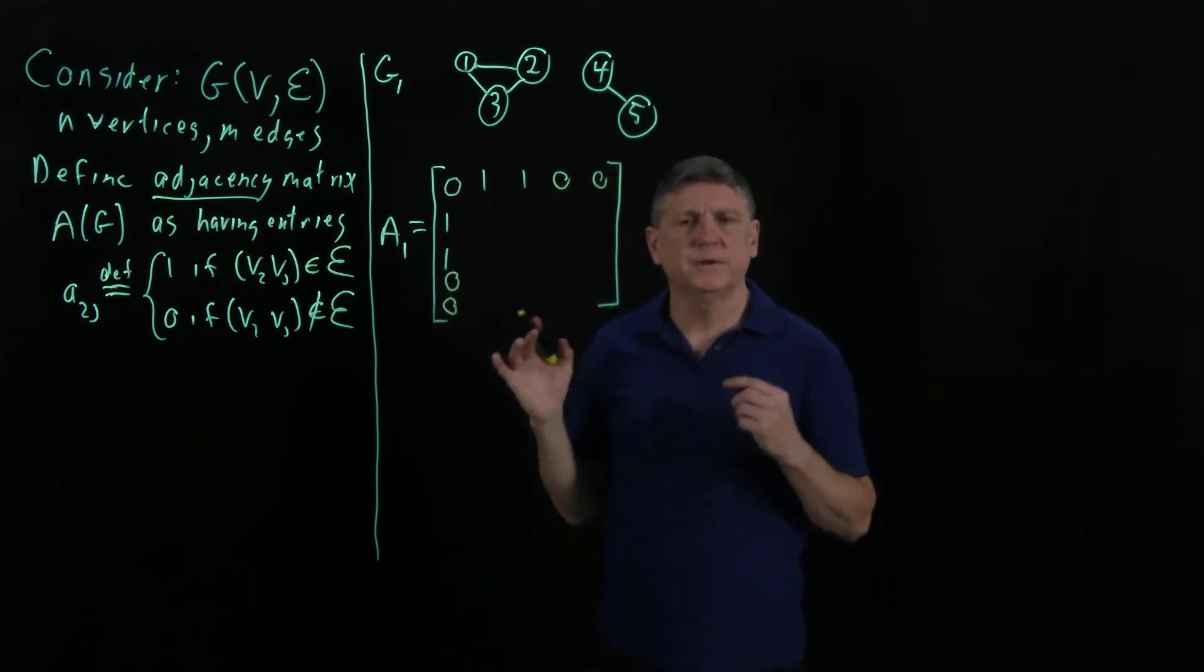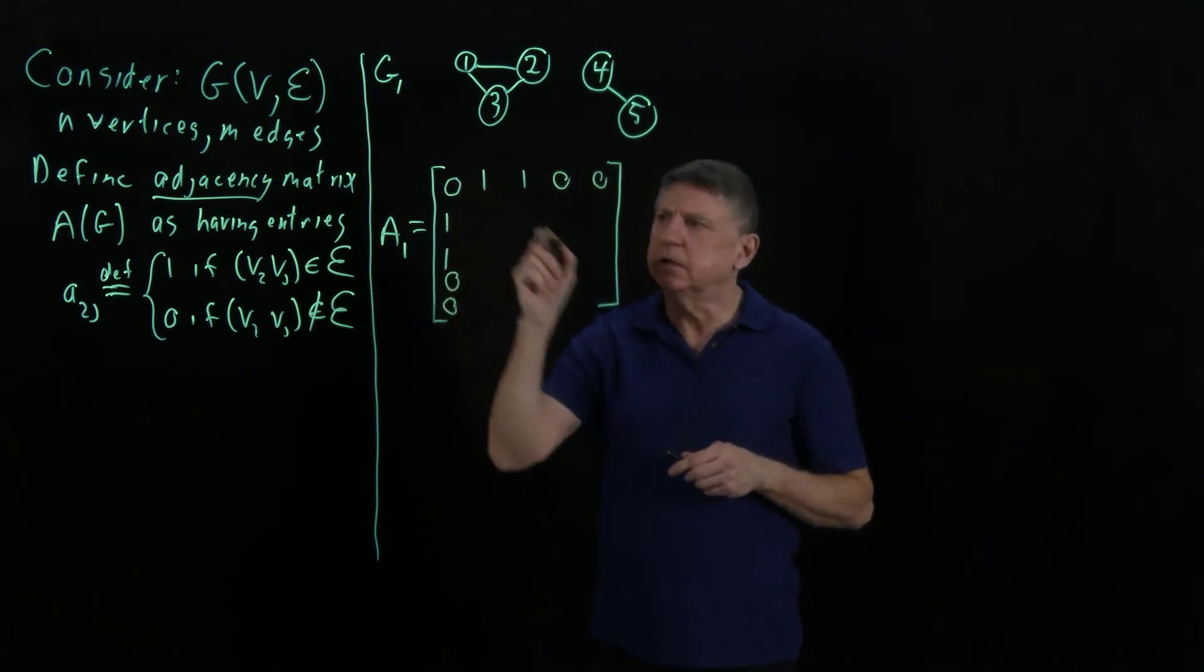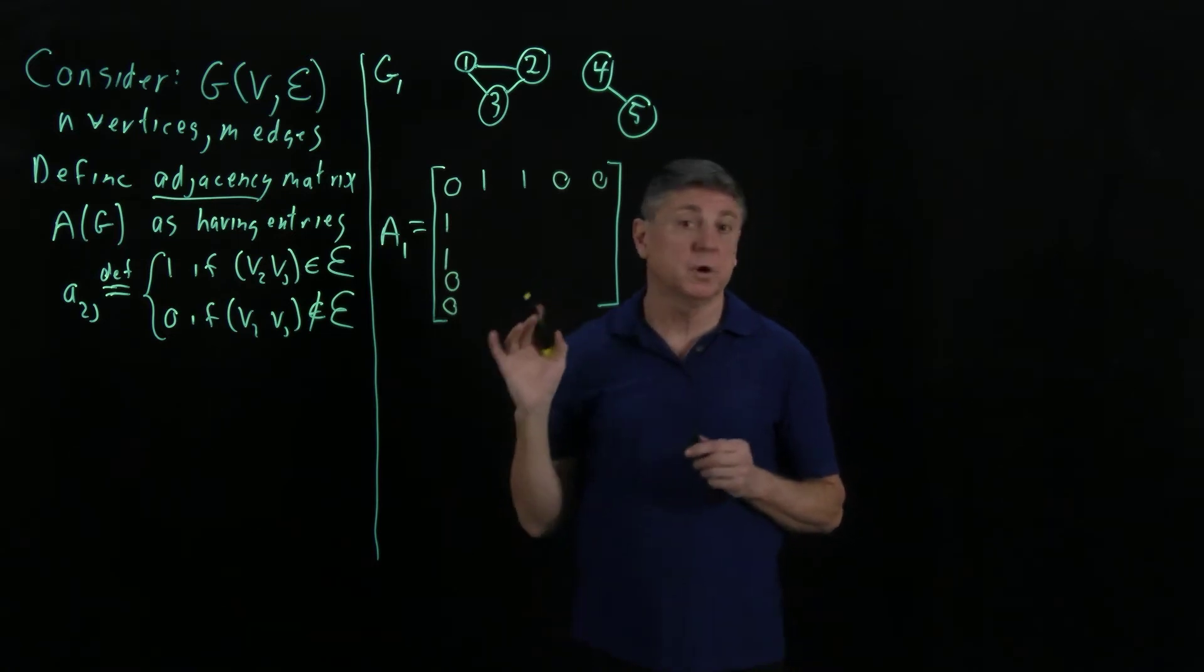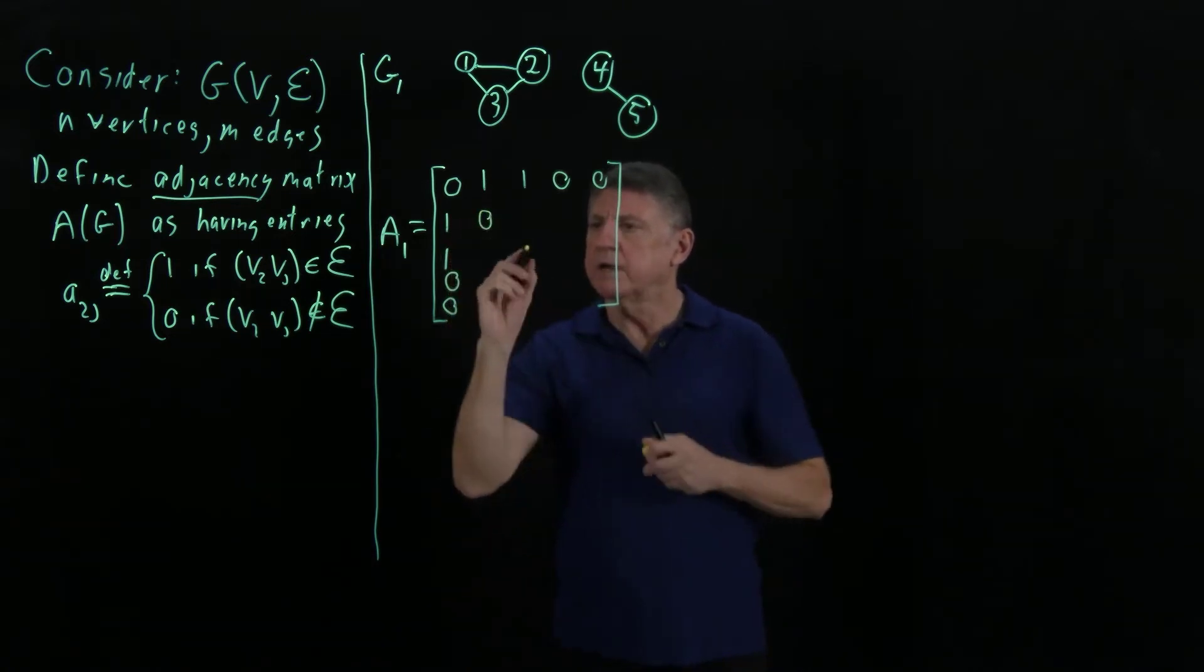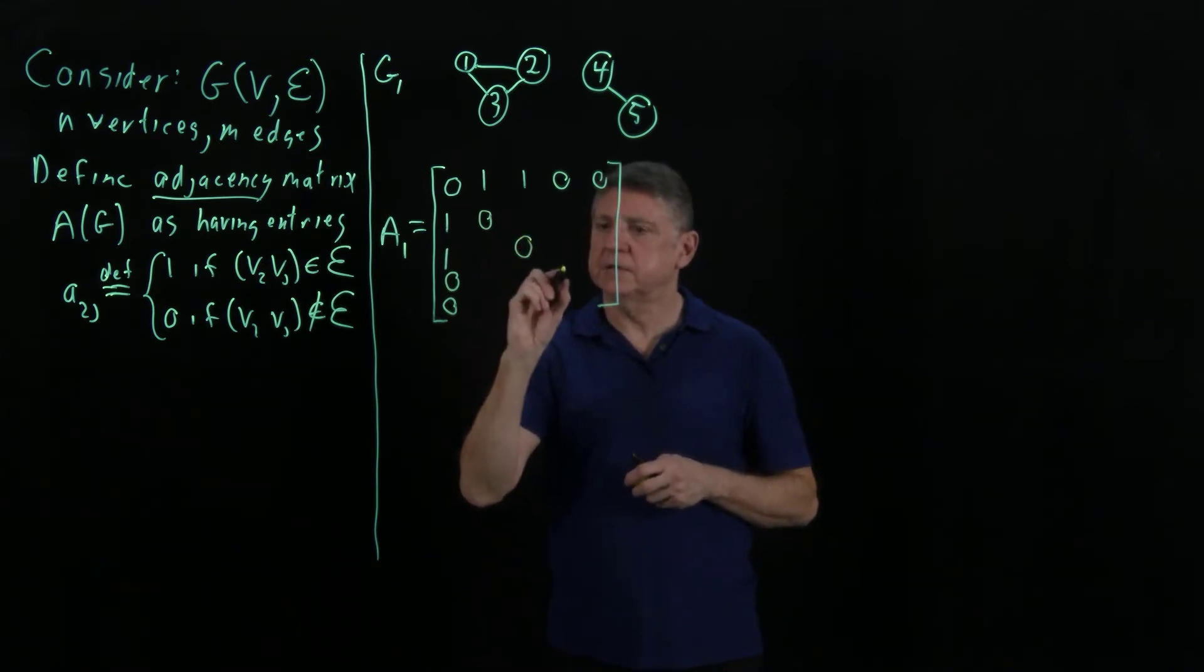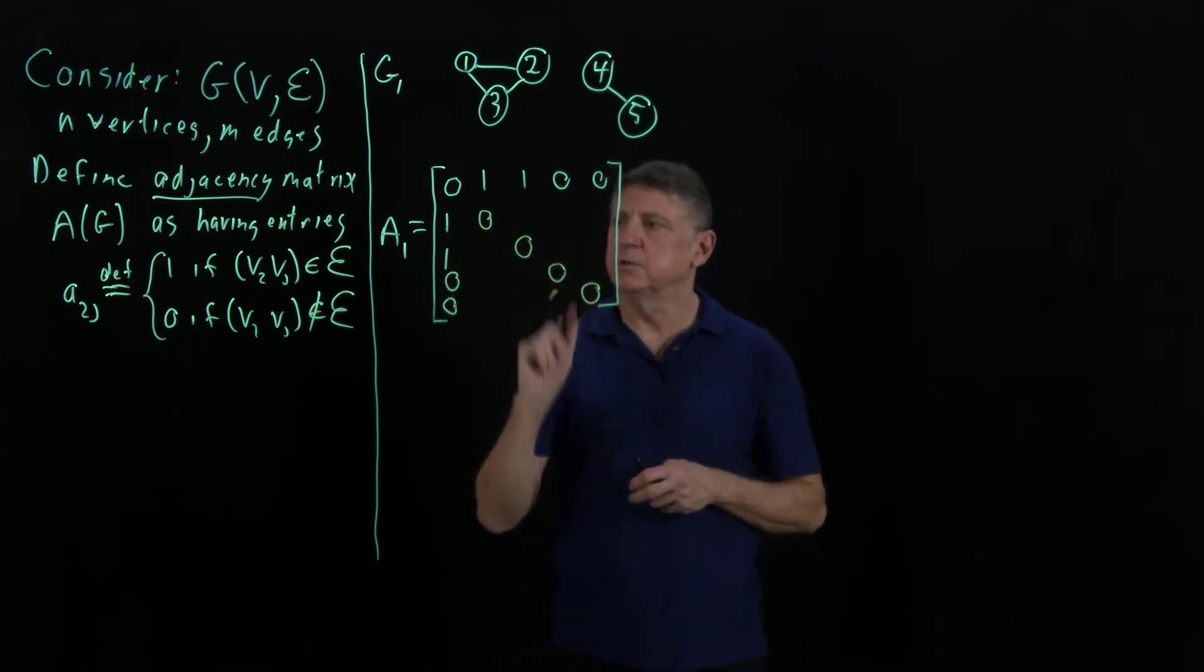Let's observe immediately that the diagonal has to be all 0s because we're not permitting loops. So that means we can immediately write all of these as 0s.